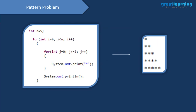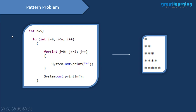Now let's work with a very commonly occurring problem known as the pattern problem. If we want to print a star pattern — 1 star in the first row, 2 in the second, up to 5 stars in the fifth row — we need the help of nested for loops. In a nested for loop, you have one for loop inside another for loop.